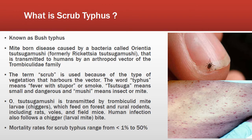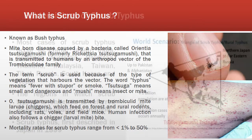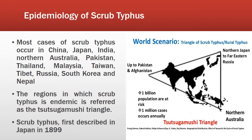The mortality rate for scrub typhus ranges from less than 1% to 50%. Most cases of scrub typhus occur in China, Japan, India, Northern Australia, Pakistan, Thailand, Malaysia, Taiwan, Tibet, Russia, South Korea, and Nepal. The region in which scrub typhus is endemic is referred to as the Tsutsugamushi triangle.